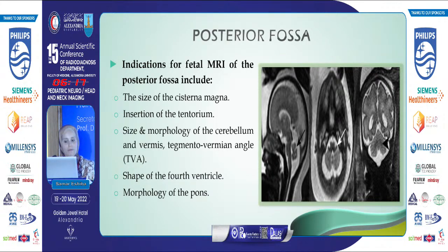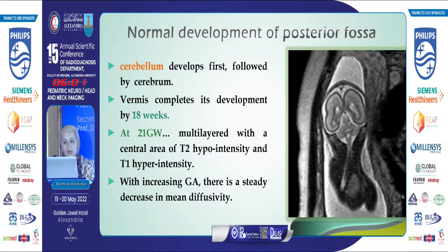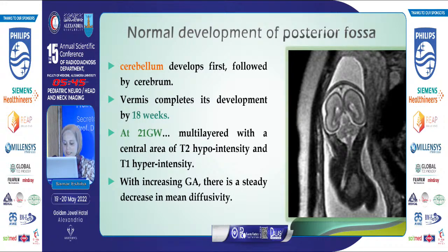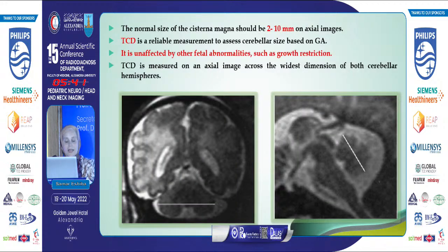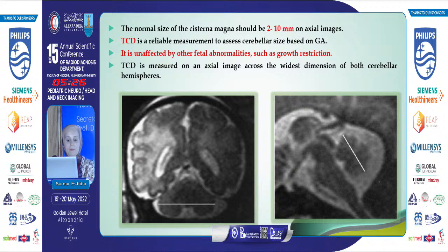The most common indications for fetal MRI regarding the posterior fossa include assessing the size of the cisterna magna, insertion of the tentorium, the size and morphology of the cerebellum and vermis, the shape of the fourth ventricle, and the morphology of the bones. In normal posterior fossa development, the cerebellum develops first, followed by the vermis, which completes development at 18 gestational weeks. At 21 gestational weeks, the cerebellum appears as a multilayer pattern with a central area of T2 hypointensity and T1 hyperintensity. Normal cisterna magna should measure between 2 to 10 mm on axial imaging, and the transcerebellar diameter assesses cerebellar size based on gestational age.